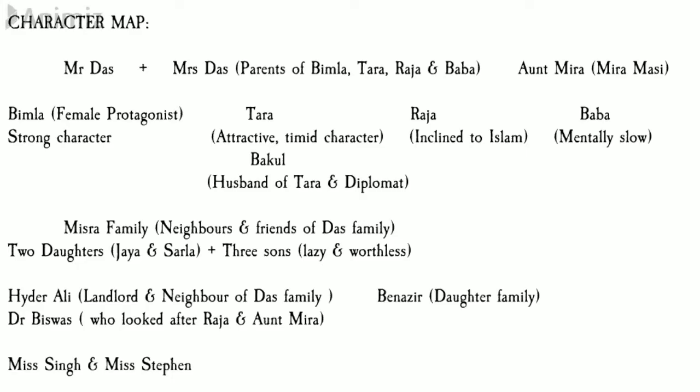Because Mr. Das and Mrs. Das were quite ignorant of their responsibilities as parents, Aunt Mira — or Mira Masi — used to take care of the four children. Then we have Dr. Vishwas, a doctor who treats Raja when he was suffering from tuberculosis, and also treated Aunt Mira when she started to have psychological problems. In the end we'll also see that Dr. Vishwas had a soft corner for Vimla, but Vimla did not reciprocate his feelings.